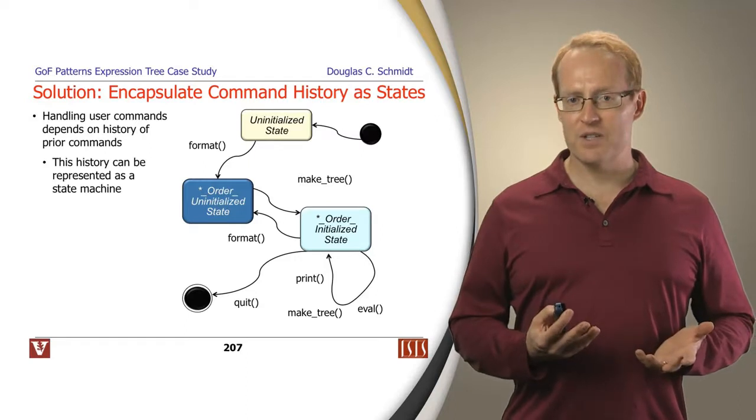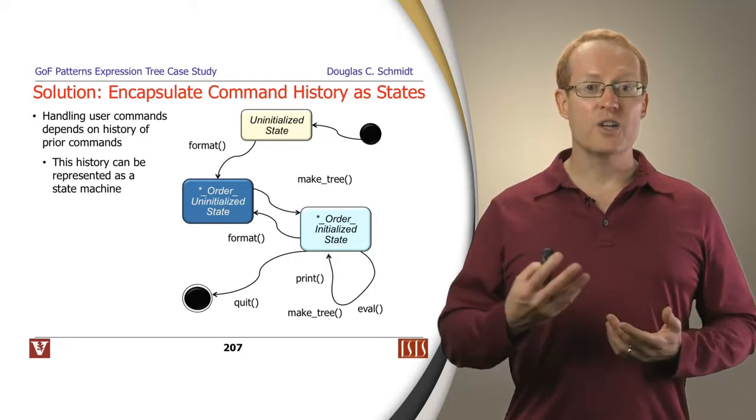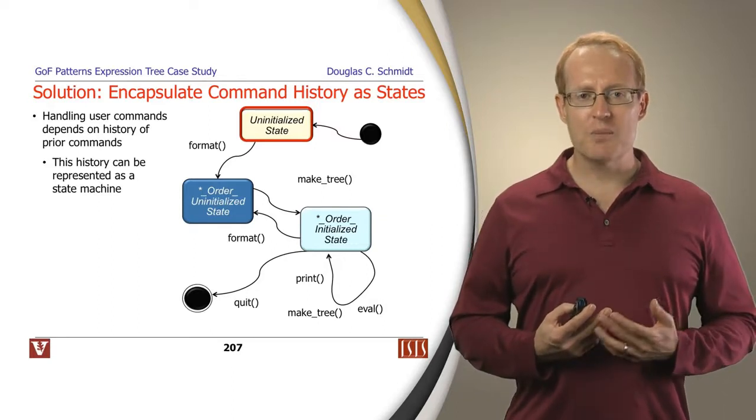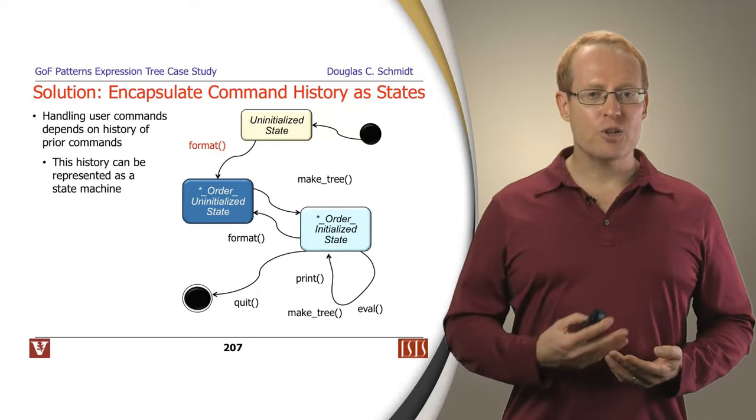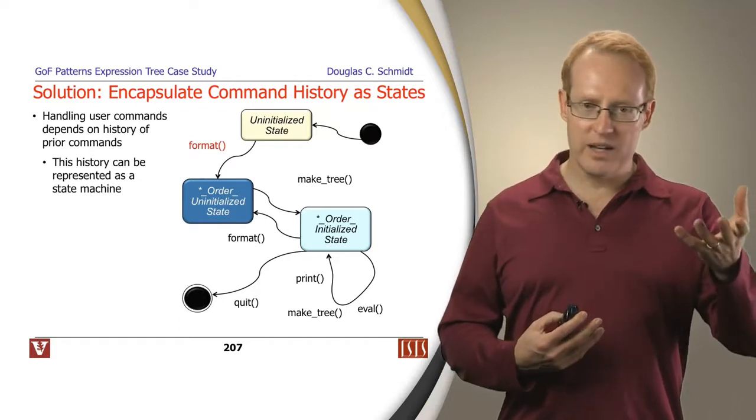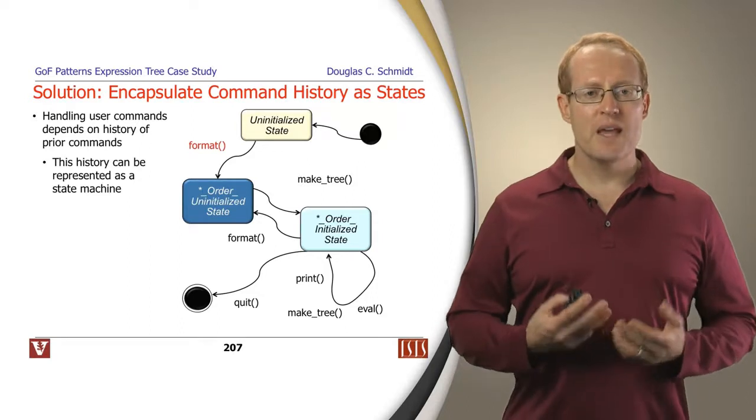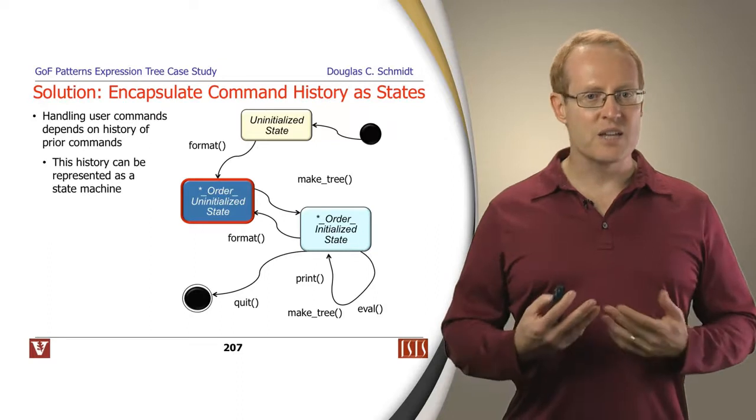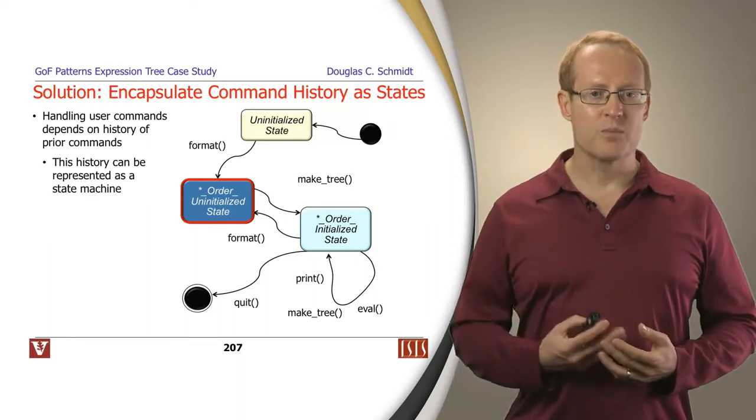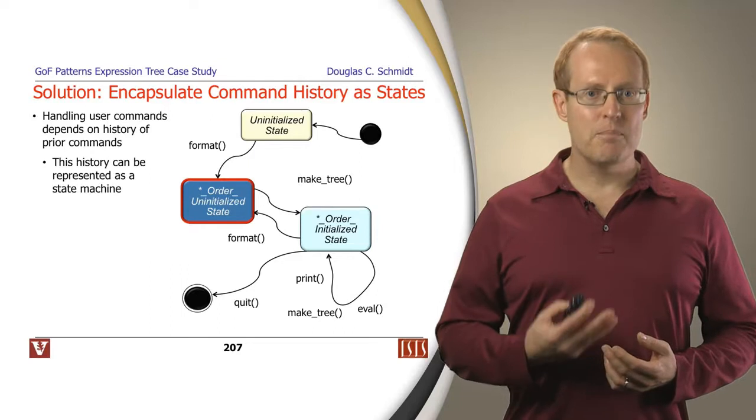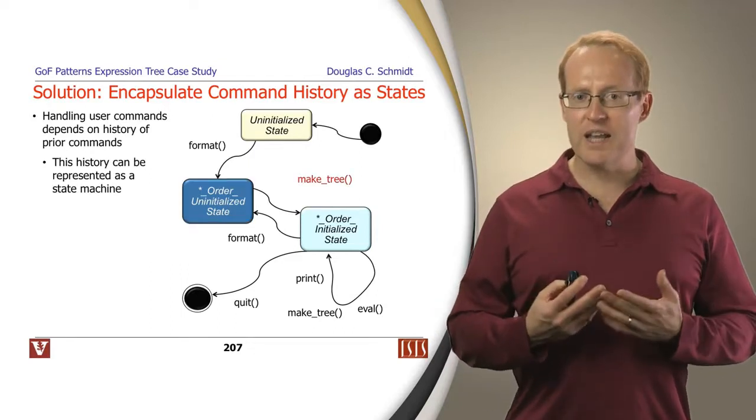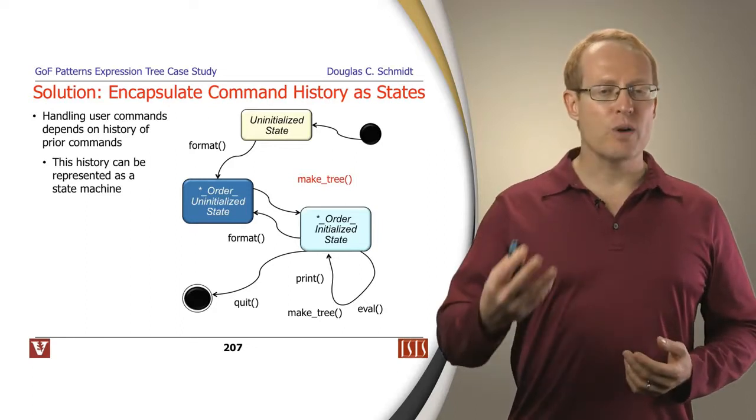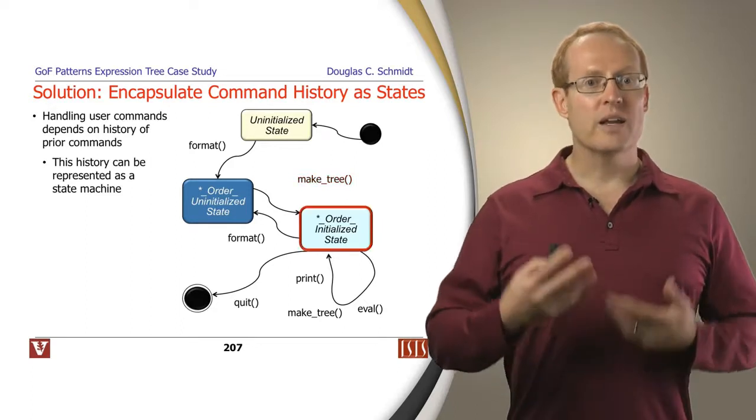As we'll see here, as we get into this a little bit more deeply, the legal order of commands depends on the commands that have preceded any given command. And we can represent this in terms of a state machine, state flow diagram. So here's an example of such a diagram. When things start out, we're in an uninitialized state. And when someone types the format command, that transitions us, because it says now you can read in the input in inorder or postorder or preorder or whatnot. And we go into a new state, which is the order uninitialized state.